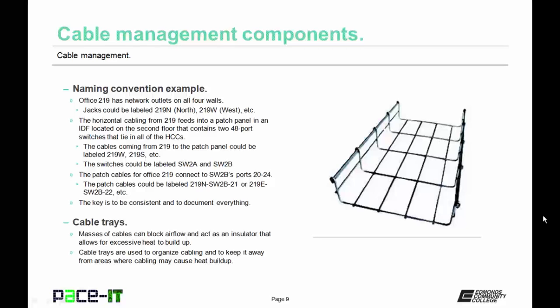The switches could be labeled SW2A and SW2B. Suppose the patch cables for office 219 connect to switch 2B's ports 20 through 24. The patch cables could be labeled 219N-SW2B-21, or 219E-SW2B-22, etc. The key is to be consistent and to document everything.